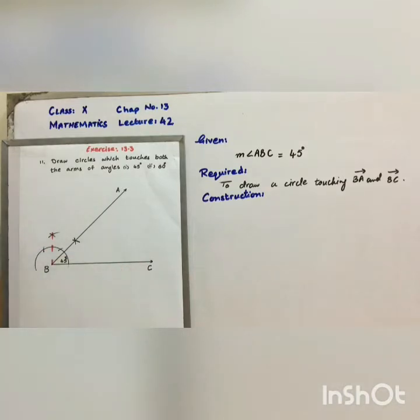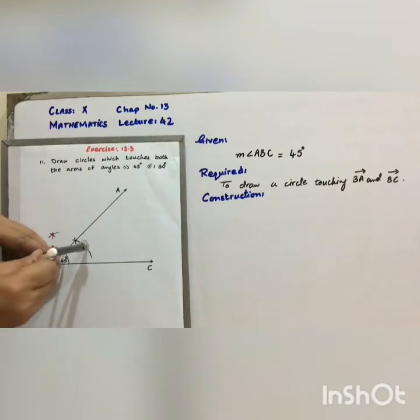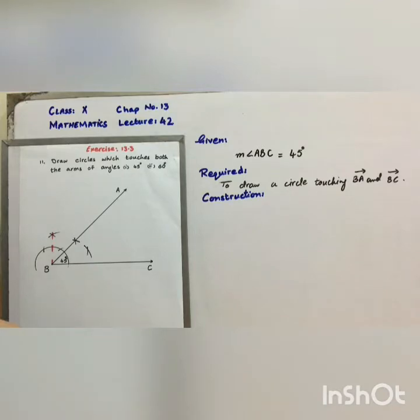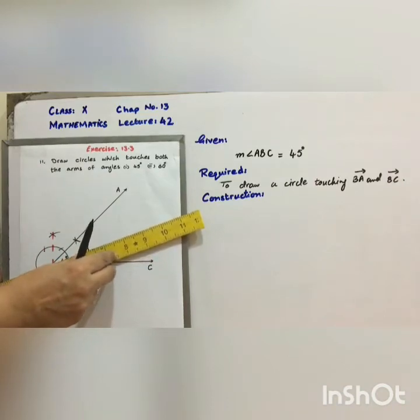First of all, we will draw the bisector of angle ABC. Name it as BD.